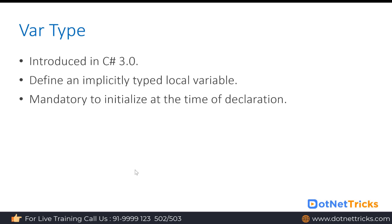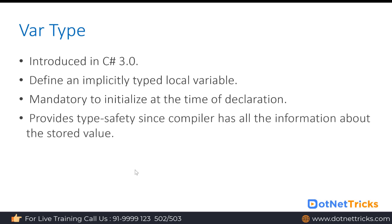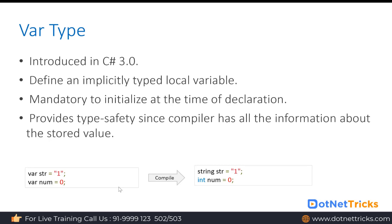In the same statement where you declare the variable, you have to assign the value. The var type provides type safety as we have with regular variables. If you assign a string value, it will only accept string values later on. For example, we declare a 'str' var variable and assign a string value; similarly, we have 'num' and assign it a value of zero. So 'str' is compiled into string type and 'num' is compiled into integer type.